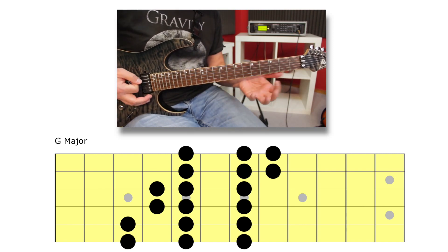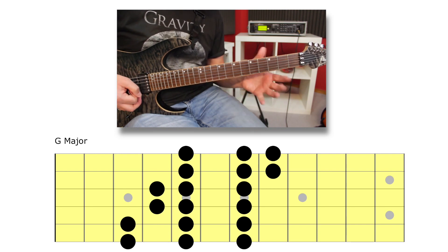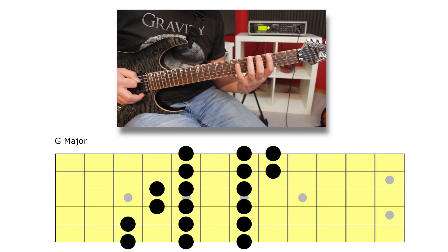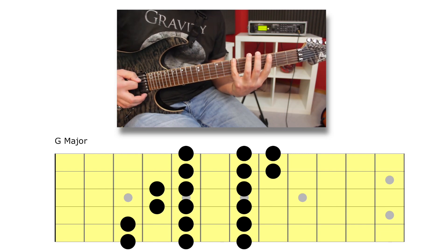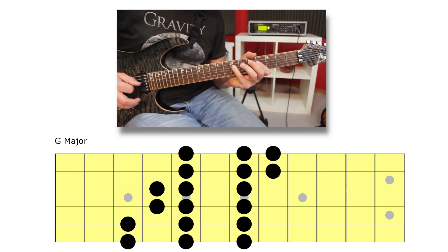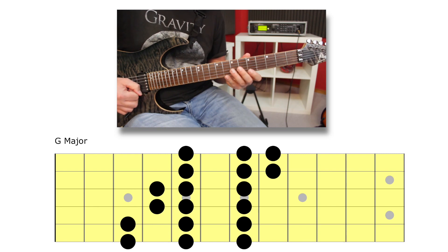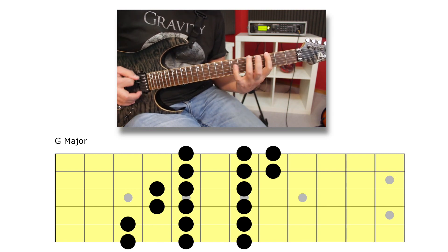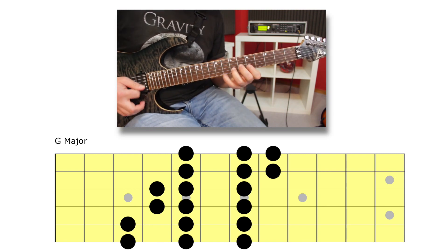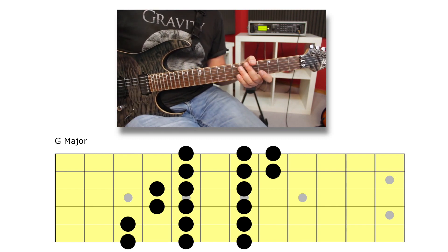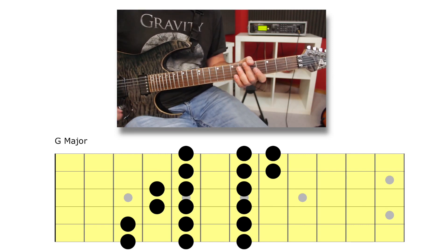Starting on the low E string, third fret — that's our G. We have three notes per string: frets three, five, seven. Followed by three, five, seven. Then four, five, seven. Four, five, seven again. Then five, seven, eight. And five, seven, eight. Three notes per string — make sure you memorize that before moving on to the sequence.